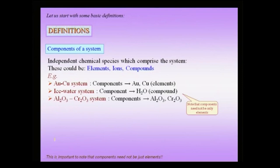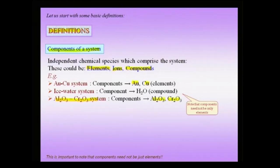Now, to start with, let us have some definitions in place. The first is: what is a component of a system? The component could be elements — for instance gold, copper, sodium, etc. They could be ions, like in an ionic system. They could even be compounds, like in the alumina-chromia system where alumina and chromia, both of which are compounds, are components of the phase diagram. It is important to note that components need not only be elements — they can be elements, ions, or even compounds.